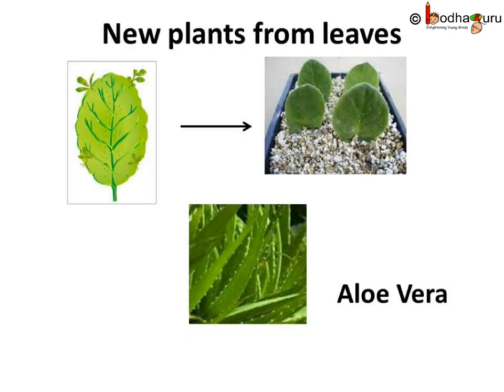Some plants have thick and fleshy leaves, like aloe vera. They have buds on the edges of the leaves, and new plants come out of these buds.